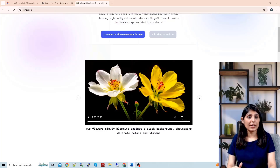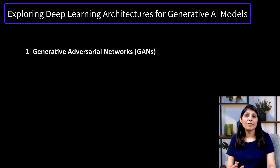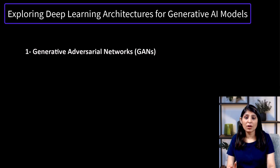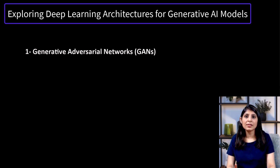Now let's explore the various deep learning network architectures used in creating generative AI models. The first is Generative Adversarial Networks, or GANs. GANs were introduced to generate realistic data by setting two neural networks against each other: a generator and a discriminator. I won't explain GANs or any other models in detail here — if you want me to cover those topics with practical implementations, let me know in the comments and I'll create separate videos on them.